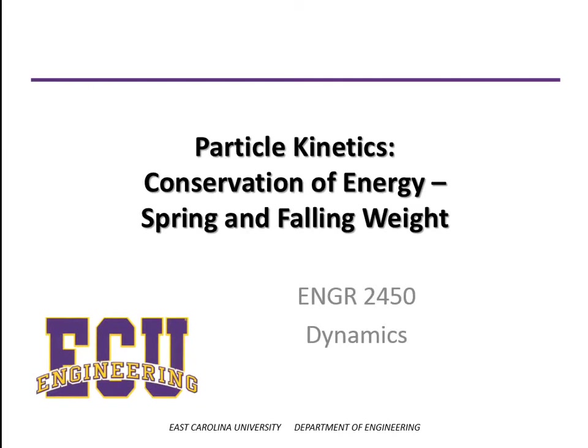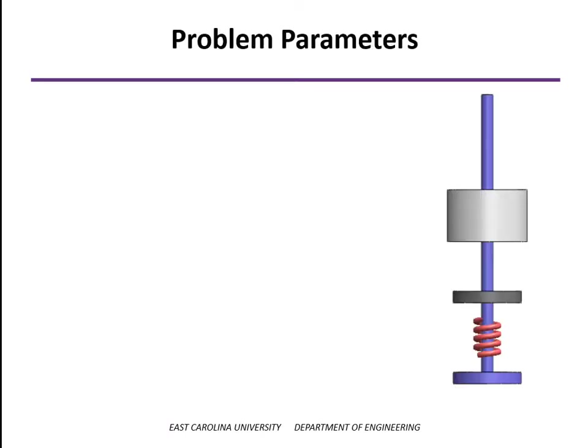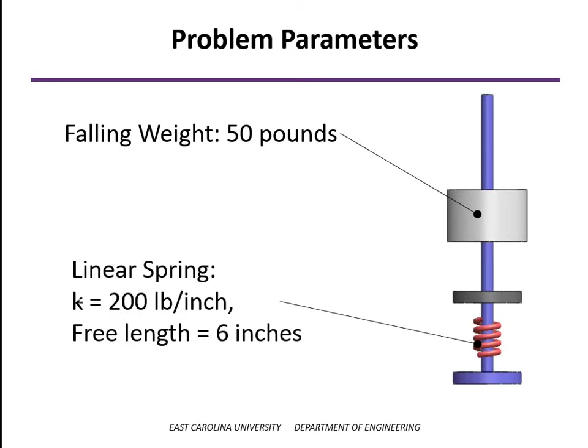This is a problem of particle kinetics that's going to be solved using the conservation of energy. In this problem we have a weight, which we've assigned a weight of 50 pounds, falling onto a spring. The spring is between a plunger and the fixed base down at the bottom. The spring has a free length of 6 inches and a spring stiffness of 200 pounds per inch.